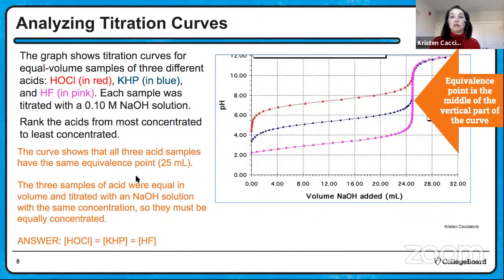Identify the species present in the greatest concentration, other than water, in the HOCl solution after 15 milliliters of titrant was added. First, 15 milliliters is after the half-equivalence point, which is at 12.5 milliliters since the equivalence point was at 25. After the half-equivalence point, more than half of the initial acid molecules have reacted with the titrant to form conjugate base. The conjugate base is OCl-minus in this case, and it will be present in the greatest amount. The correct answer is OCl-minus.